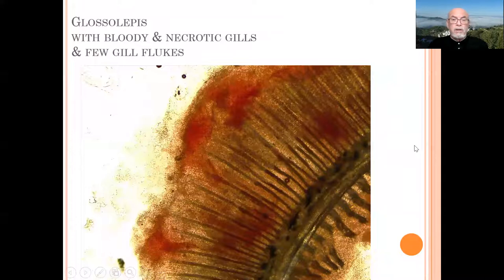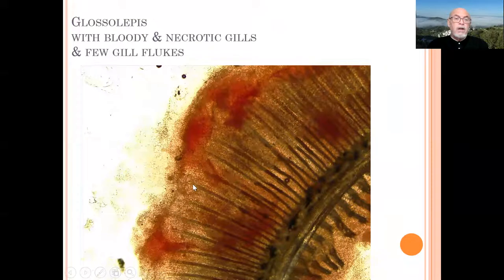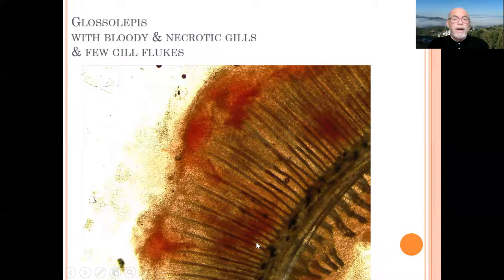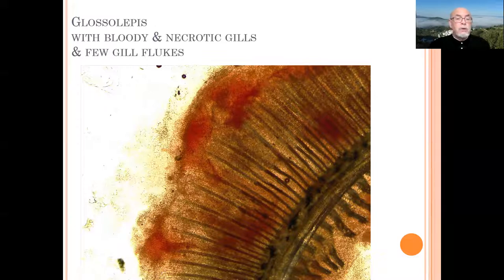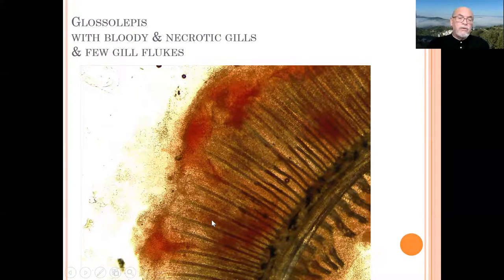If we look under the microscope, we see bloody patches on the gills and necrotic parts in the gills. So this gill is in a very bad condition and not capable of doing any good respiratory activities. The bleeding is abnormal and the necrotic patches are abnormal.